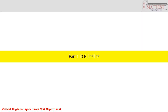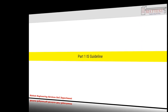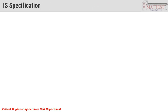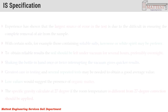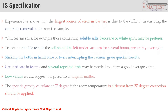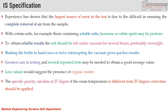Starting with the first part: IS Guideline. The IS Guideline for Determination of Specific Gravity notes that the largest source of error in the test is due to incomplete removal of air from the sample, which is difficult to achieve.